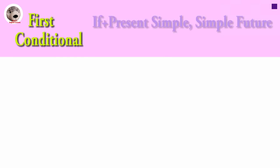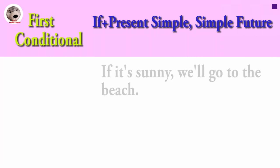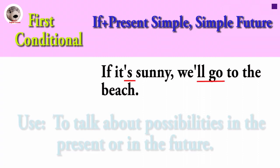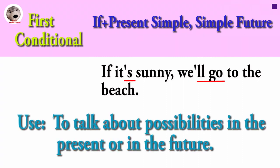First Conditional. If it's sunny, we'll go to the beach. Use the First Conditional to talk about possibilities in the present or in the future.